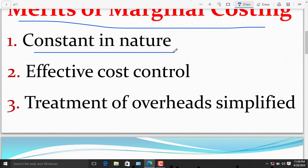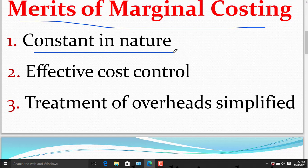First one, constant in nature. Variable costs fluctuate from time to time, but in the long run, marginal costs are stable. Marginal costs remain the same irrespective of the volume of production.